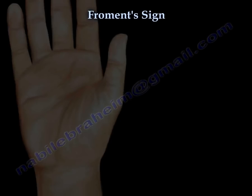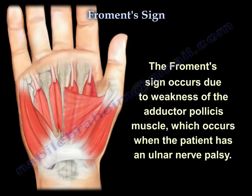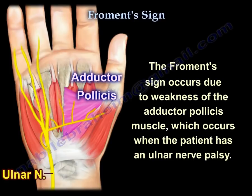Froment's sign occurs due to weakness of the adductor pollicis muscle, which occurs when the patient has an ulnar nerve palsy.